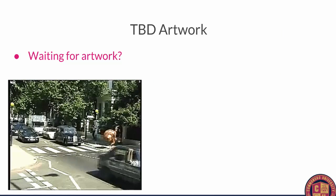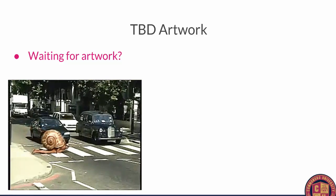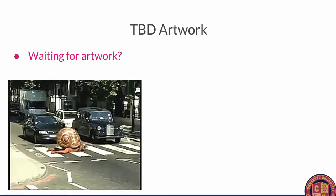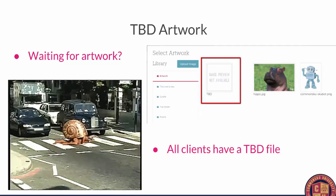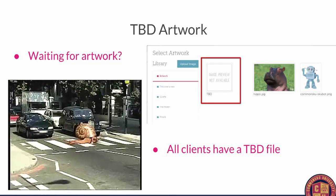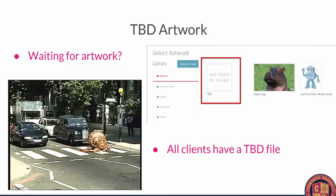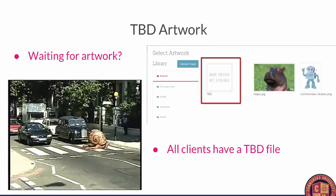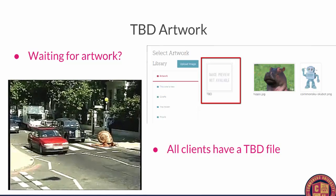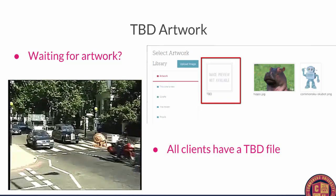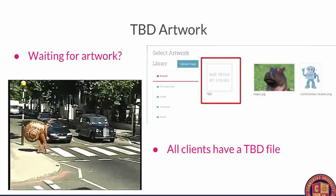Next is To Be Determined Artwork. Sometimes you're waiting for artwork and you just want to get your client to sign off on an order and get it into production. Every client profile actually has a to-be-determined file. You can add this file to any item and still fill out all the details so the client can see them. The to-be-determined file shows as a blank on the sales order or estimate, and when you actually get the artwork, you can swap the to-be-determined file out for the actual artwork and then generate or update your Decorator PO.